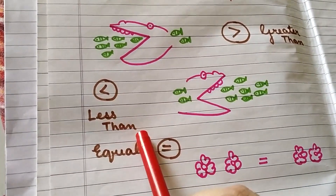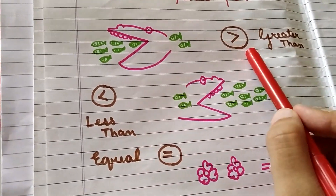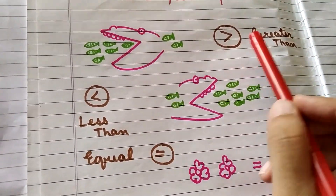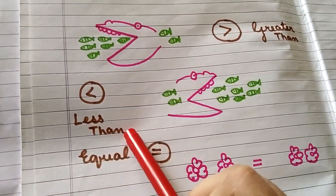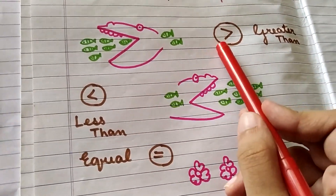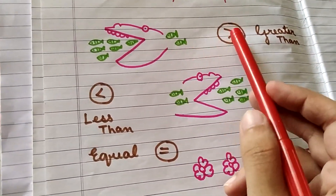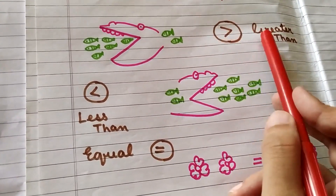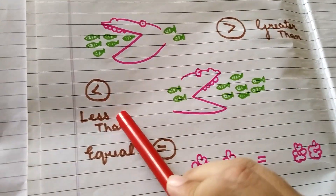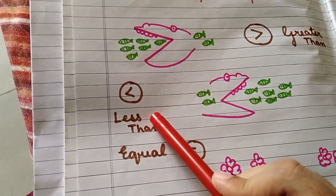So this is the greater than sign and this is your lesser than sign. The opposite direction of greater than is less than.